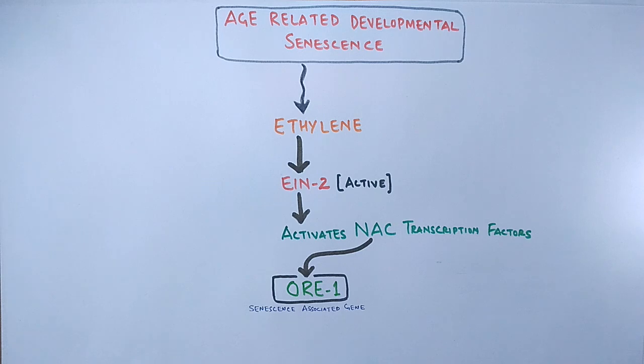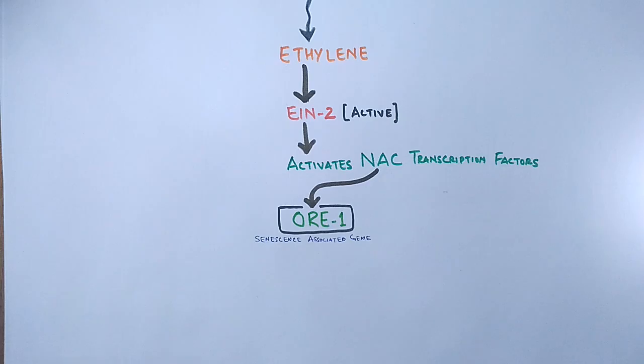And it must be noted that ORE1 gene is the chief senescence promoting factor in Arabidopsis. So from this ORE1 gene, the senescence will be regulated. The ORE1 gene activates several genes that directly promote the leaf senescence.